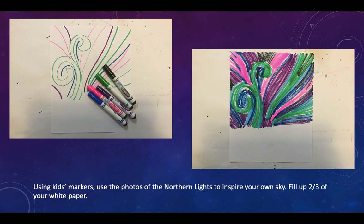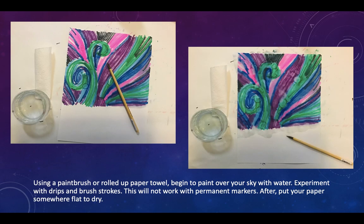To begin, you're going to make your sky using kids markers. Use the photos of the Northern Lights to inspire your own sky. Northern Lights are often green, pink, purple, or blue — sometimes red. Fill up two thirds of your white paper.